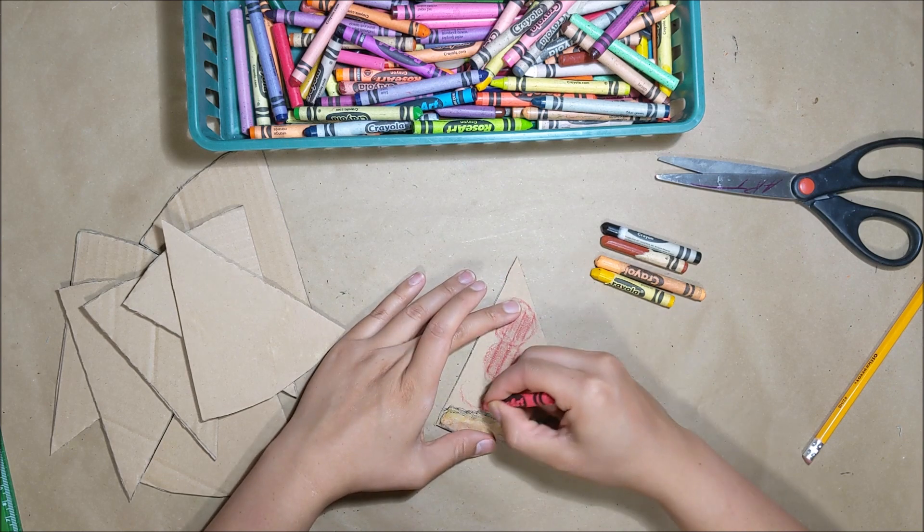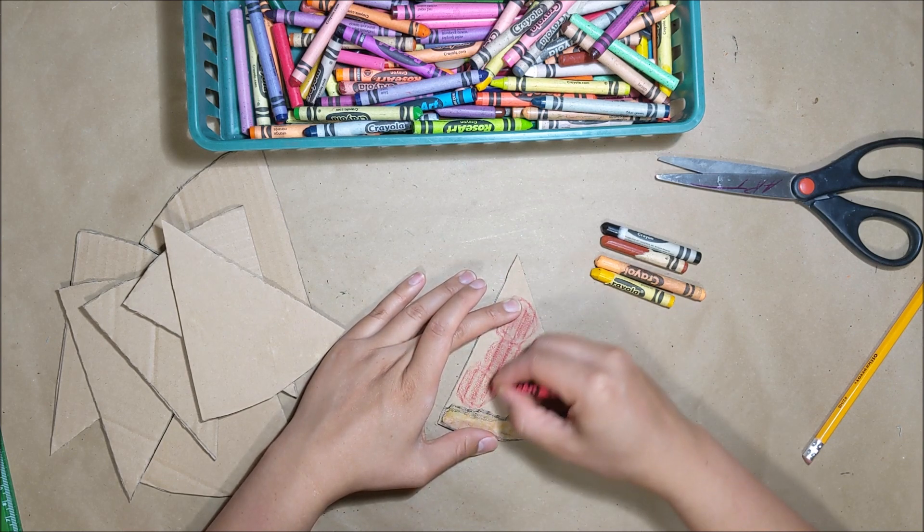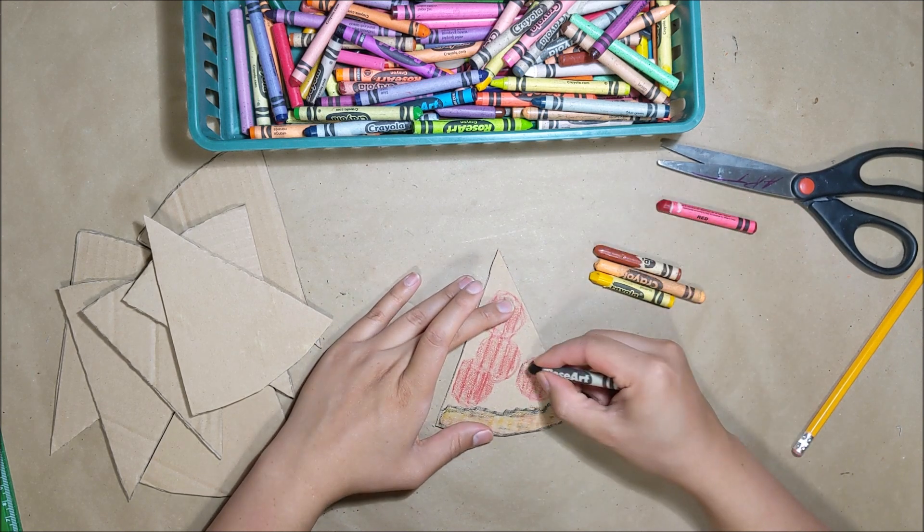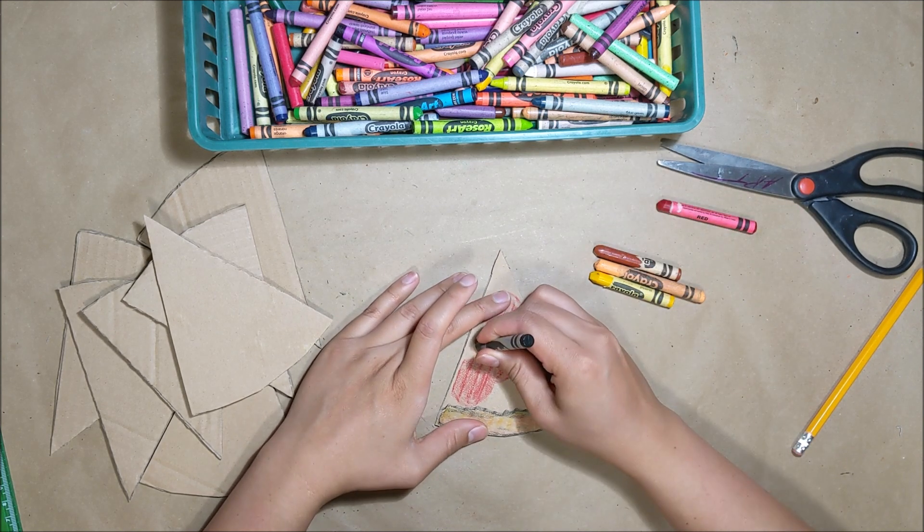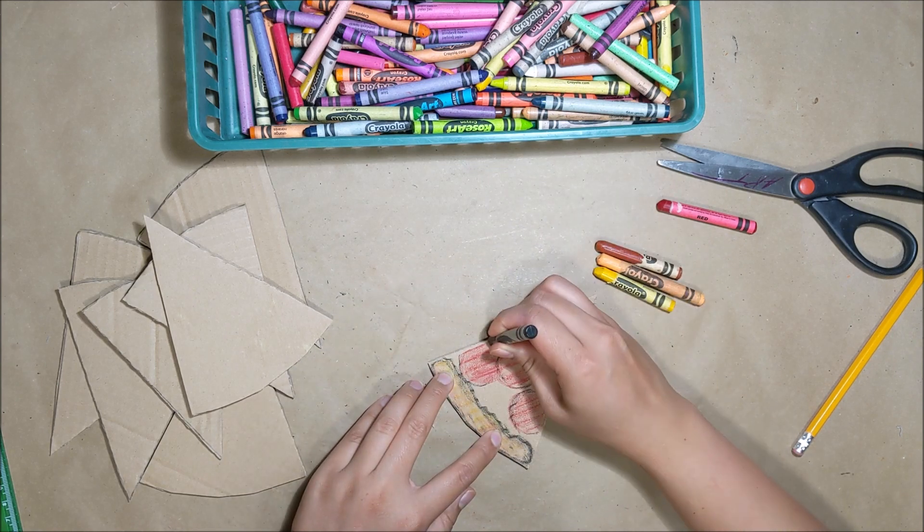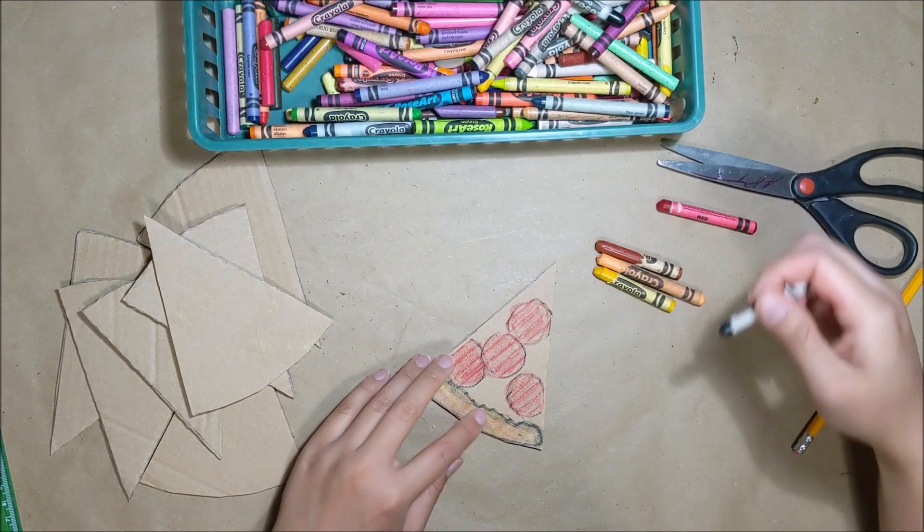And then I'm going to also use my black crayon to outline just roughly around my pepperoni. It doesn't have to be super dark. With a light outlining it just makes it easier to see.